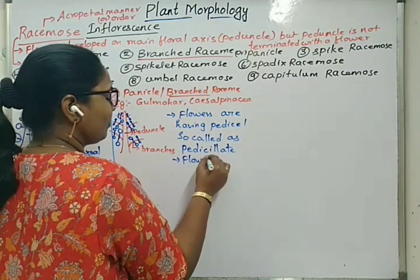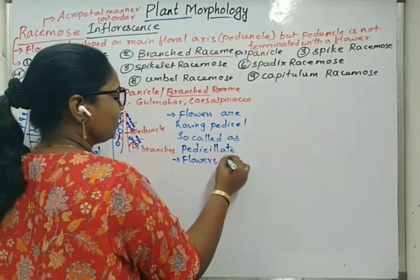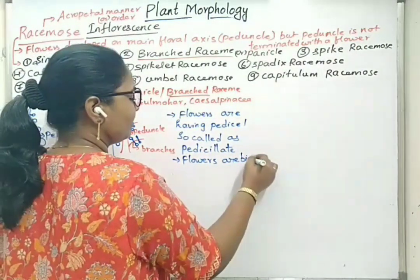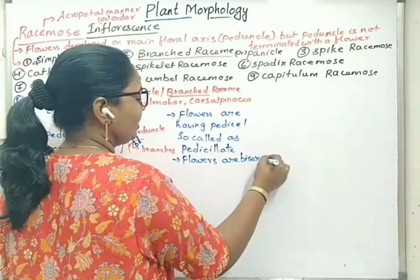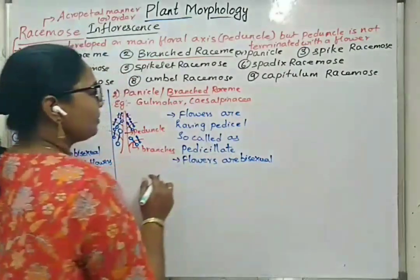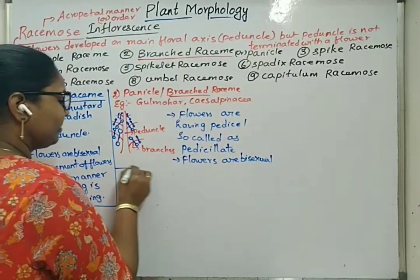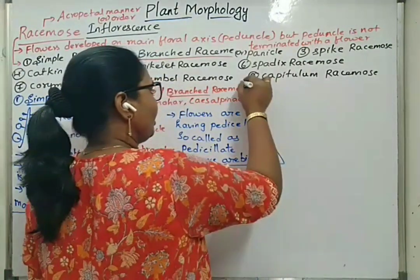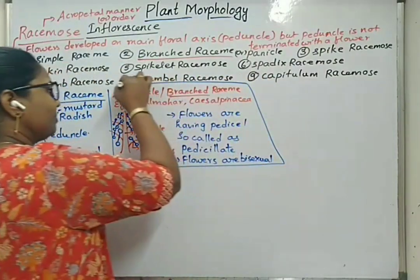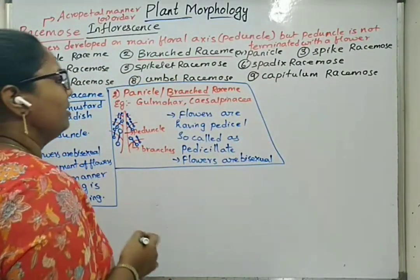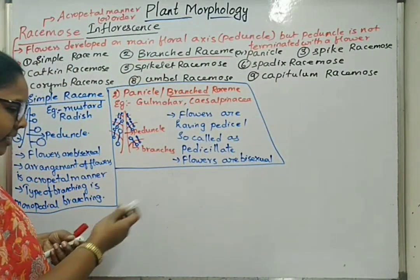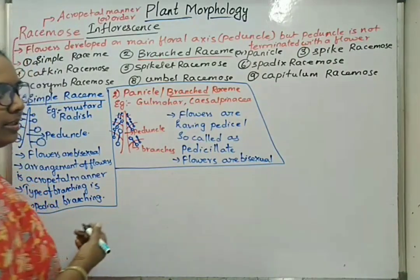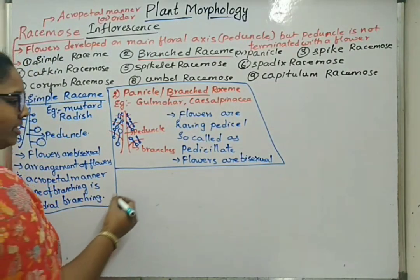Flowers are bisexual. We see this in case of Caesalpiniaceae family members and Gulmohar. Next one is spike racemose type of inflorescence.